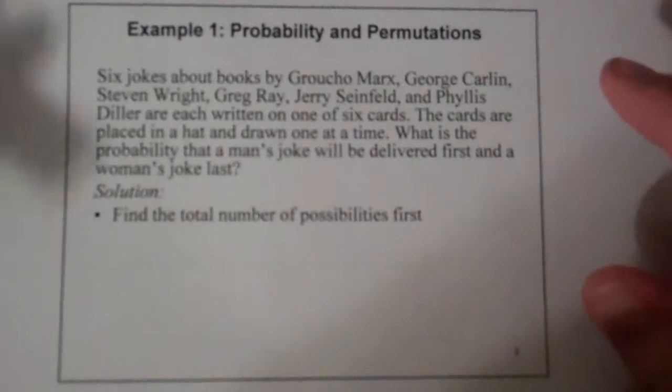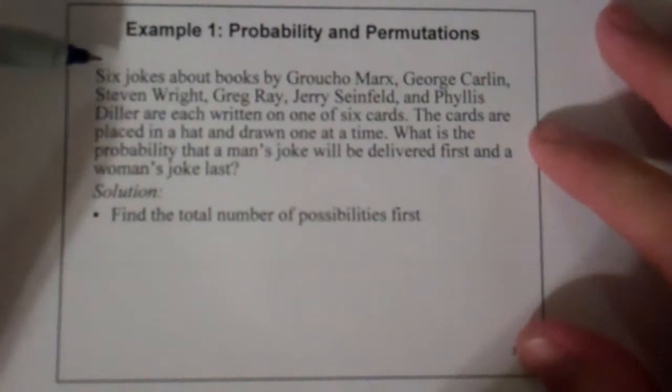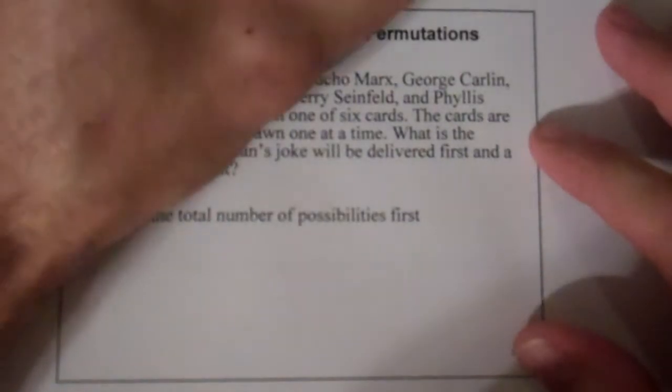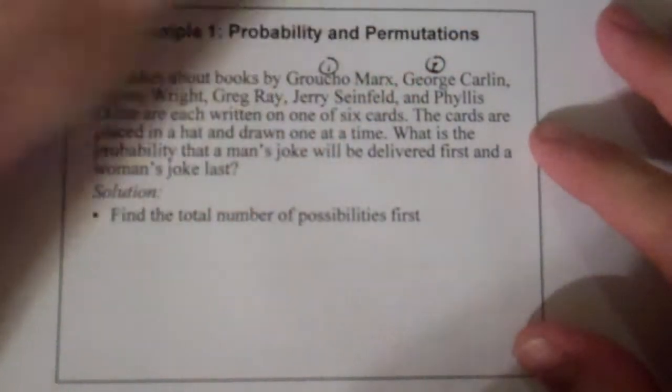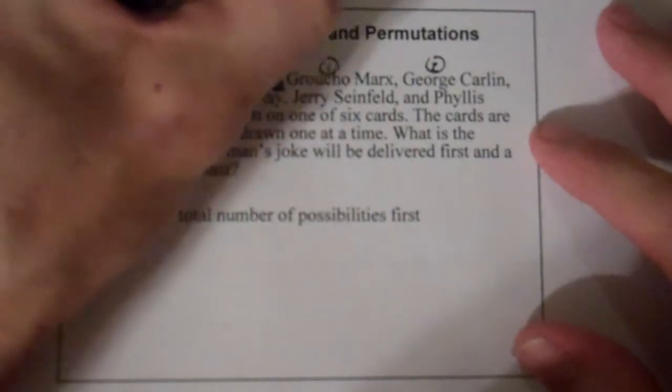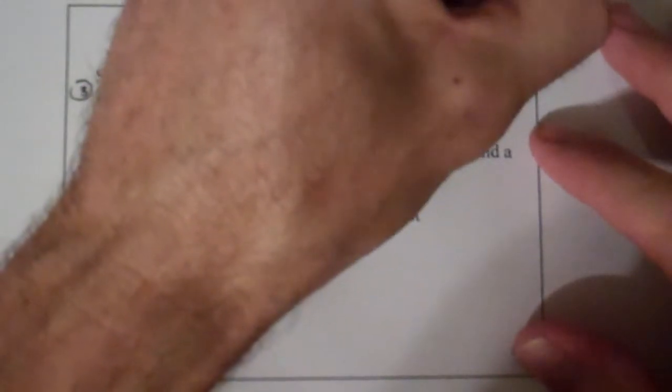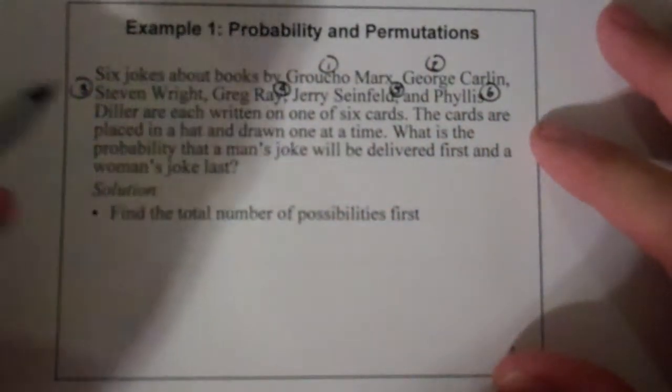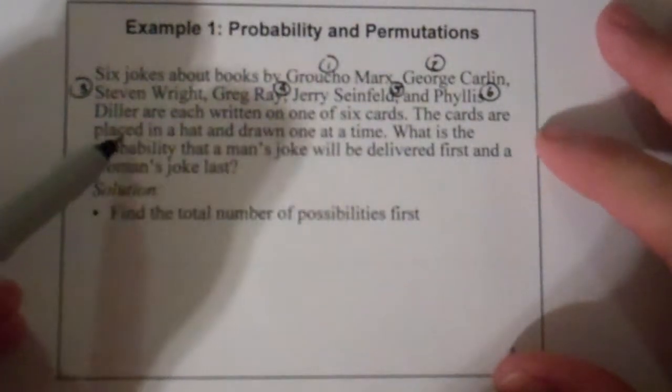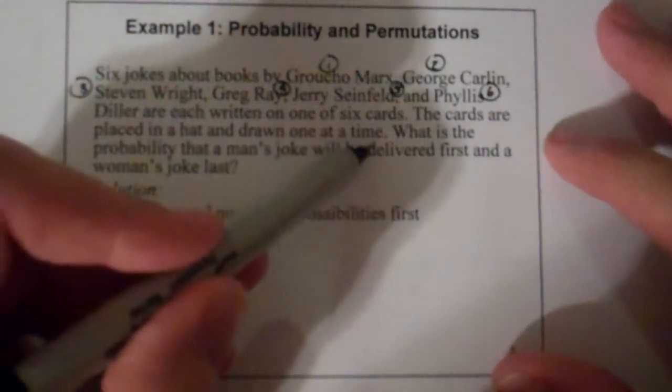So here's our first example, example number one. We're going to have six jokes about books by Groucho Marx, George Carlin, Stephen Wright, Greg Ray, Jerry Seinfeld, and Phyllis Diller. So there's six comedians there, and each are written on one of six cards. The cards are placed in a hat and drawn one at a time.